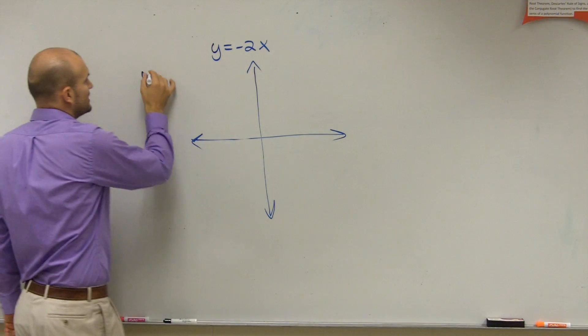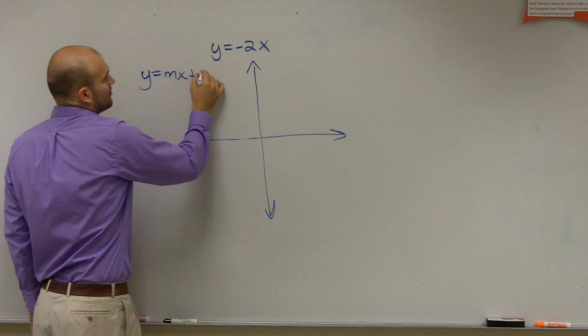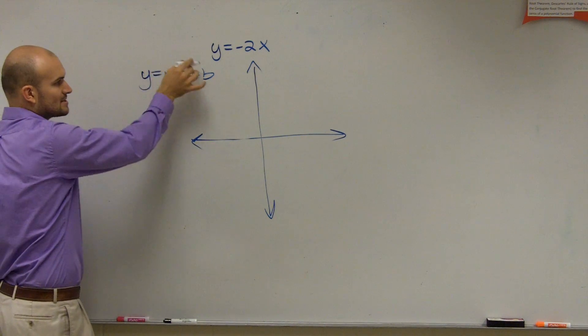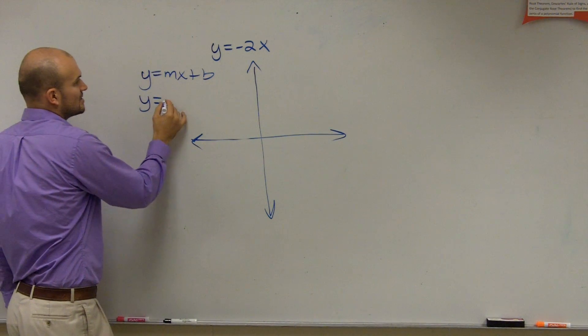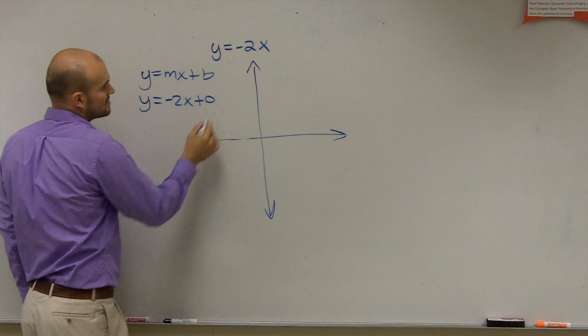However, for this one, if I want to put it into y equals mx plus b form, where m is my slope and b is my y-intercept, I can write this simply as negative 2x plus 0.